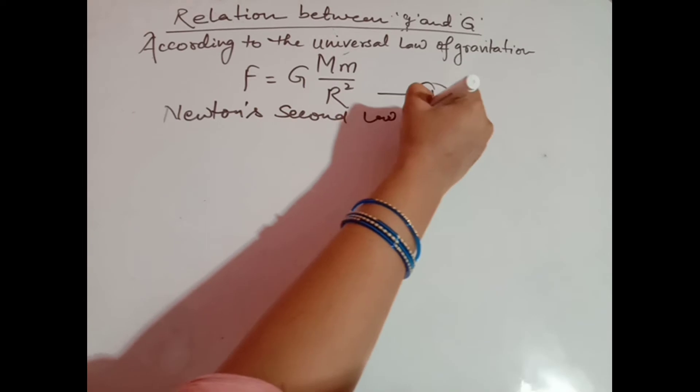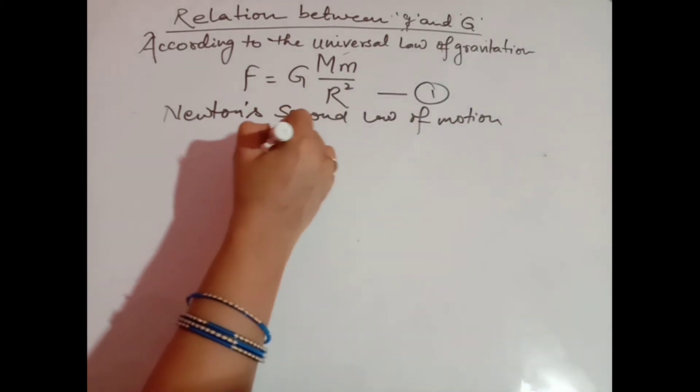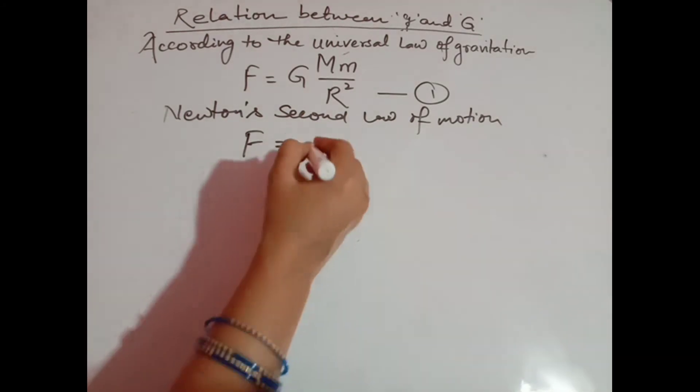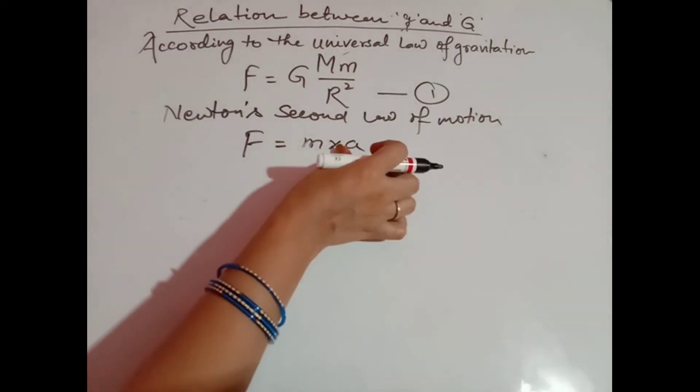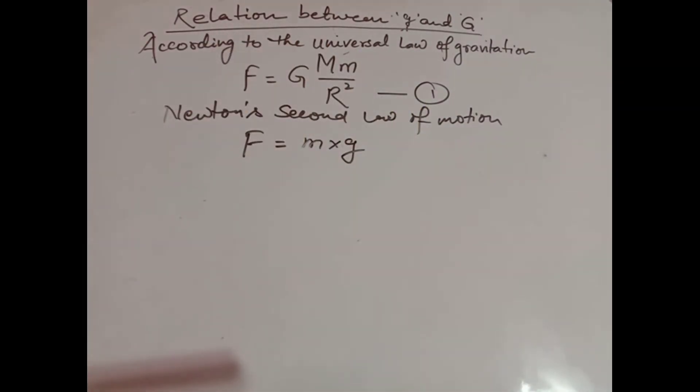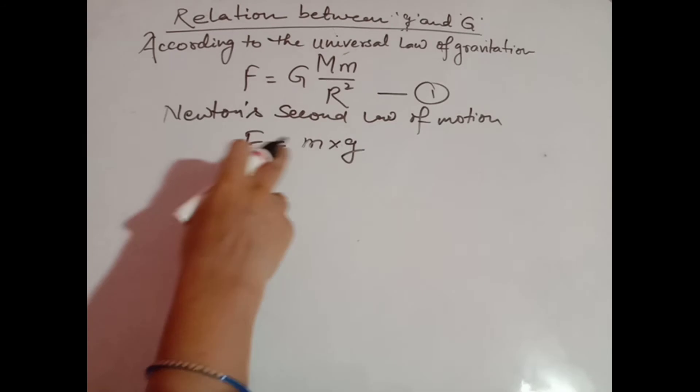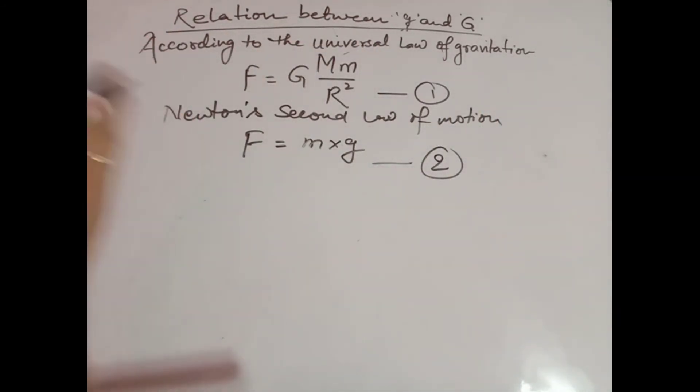Again, according to Newton's second law of motion, we know that F is equal to mass into acceleration, m into a. But in this case, in the place of a we have to use g because this object is under the acceleration due to gravity. F is equal to m into g. Make it equation two.